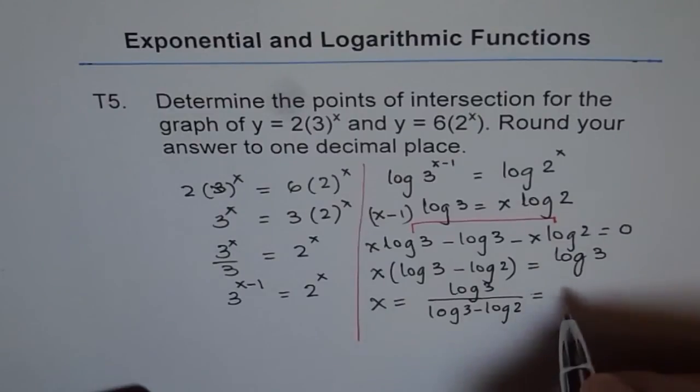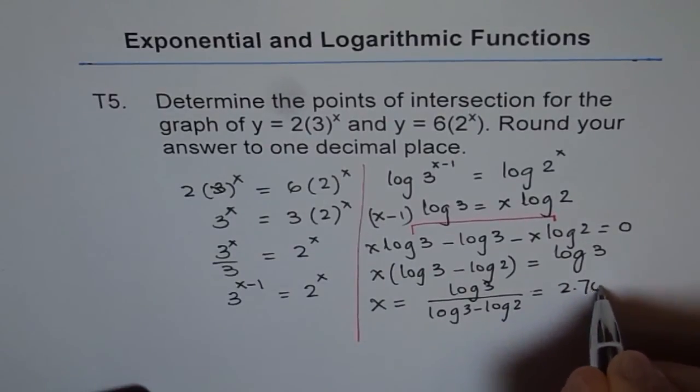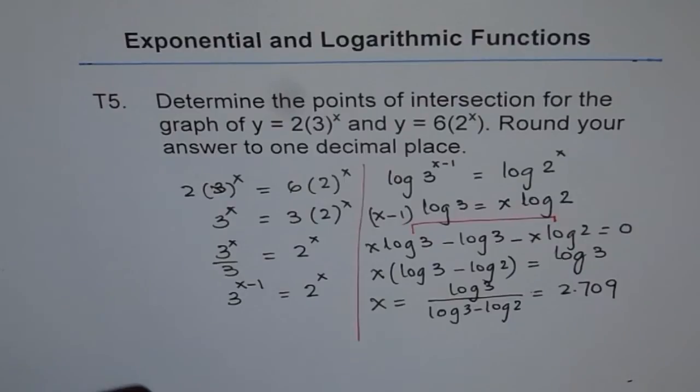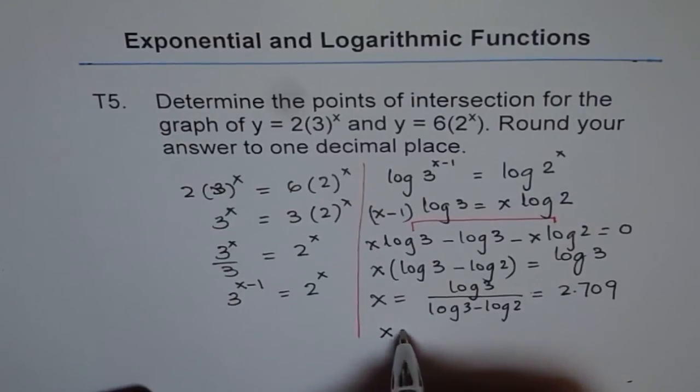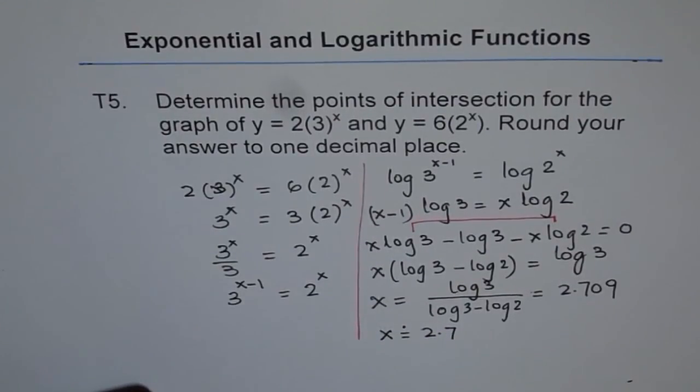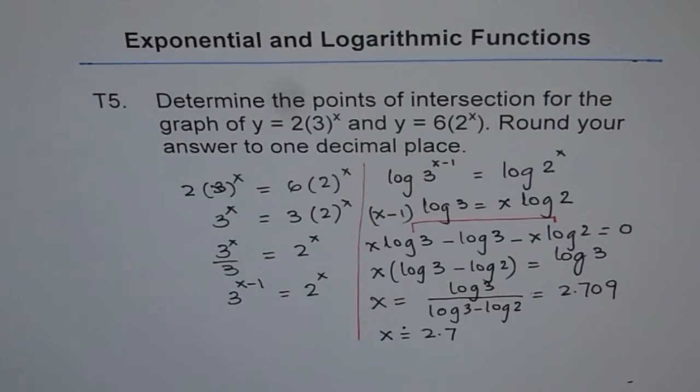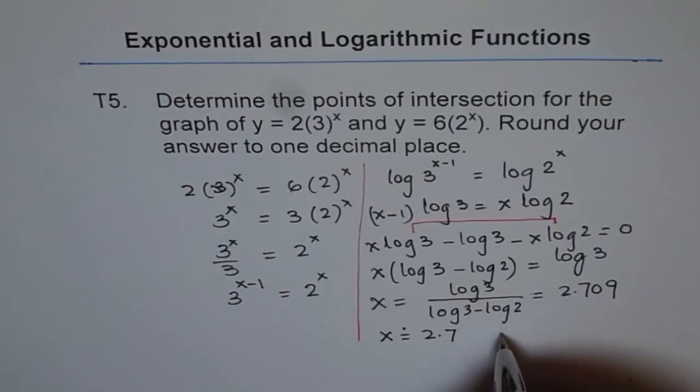This equals 2.709. So round your answer to 1 decimal place. We can write this as x equals approximately 2.7. That is our solution for the given problem and that is our answer.